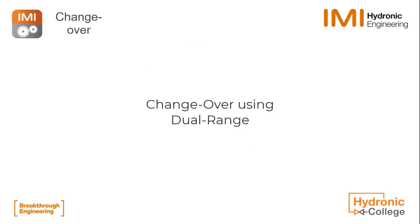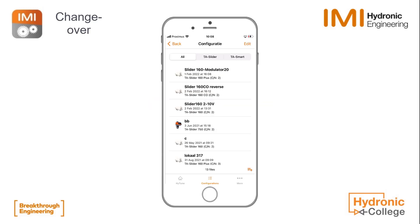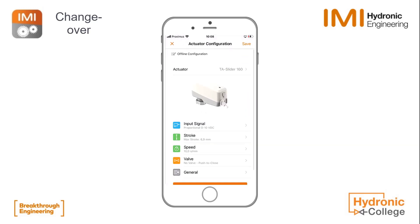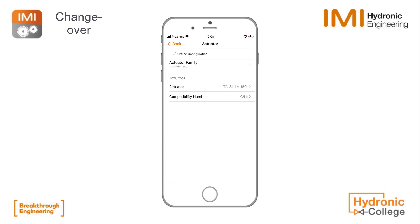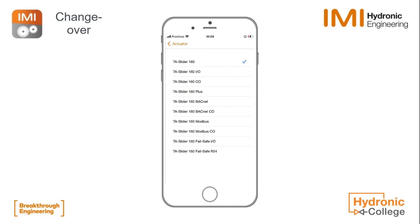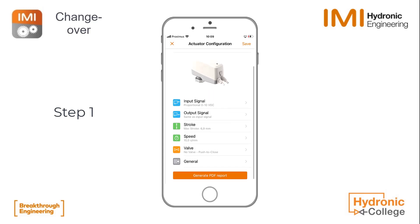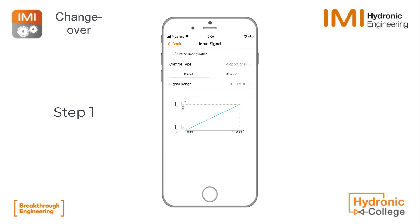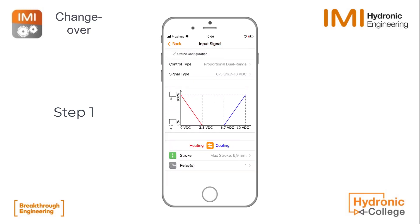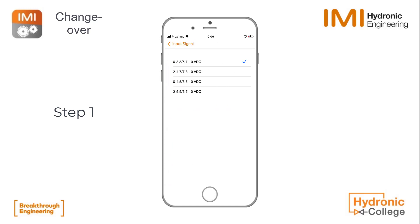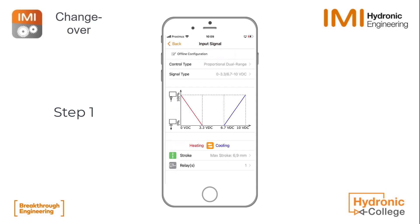Let's look at the configuration for dual range first. I will demonstrate this by creating an offline configuration file in HiTune. I will select a Slider 160 changeover and then we can start programming. The first step is to set the input signal to dual range. Simply by clicking on control type in the input signal menu, you will find three options — we select dual range. You see now that the input signal is 0 to 3.3 volts and 6.7 to 10 volts, which of course we can change. If needed, you can switch the heating and cooling mapping by clicking the orange button.